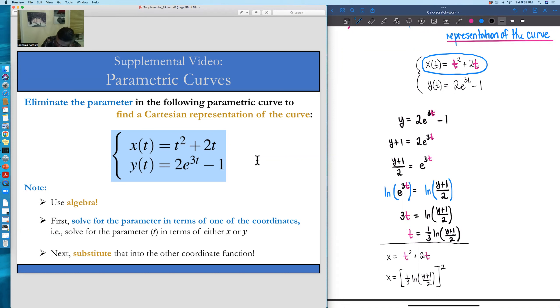And then finally, plus 2 times that same t in terms of y, 2 times 1 over 3 ln of y plus 1 all over 2.